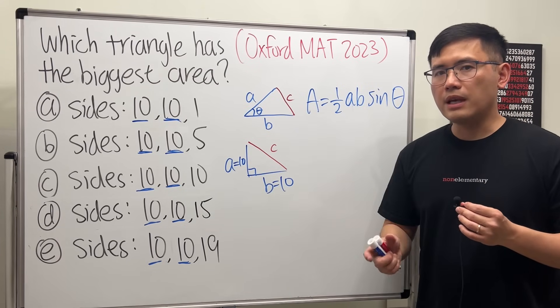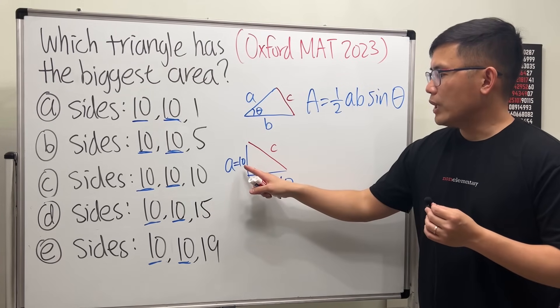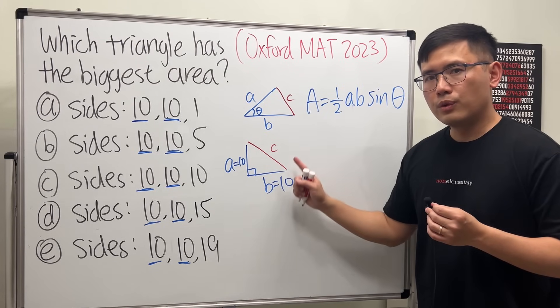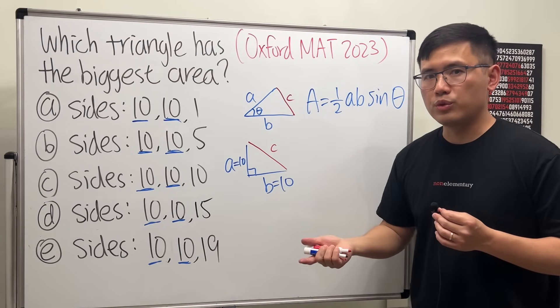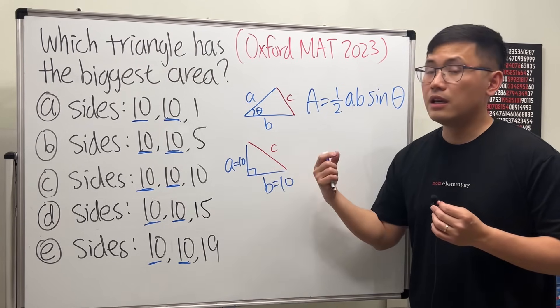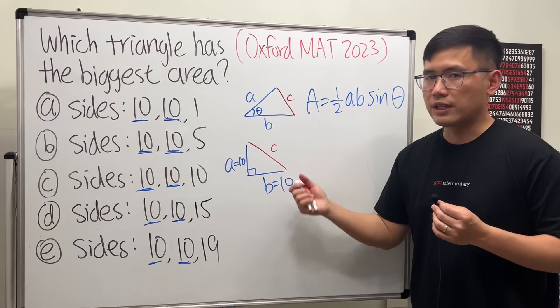Now if you want to get the biggest area, then we have 10 and 10, which means this will be 10 times square root of 2, because this is a 45-45-90 special right triangle since the two sides are equal. So c must be 10 times square root of 2 in order for us to get the biggest area.